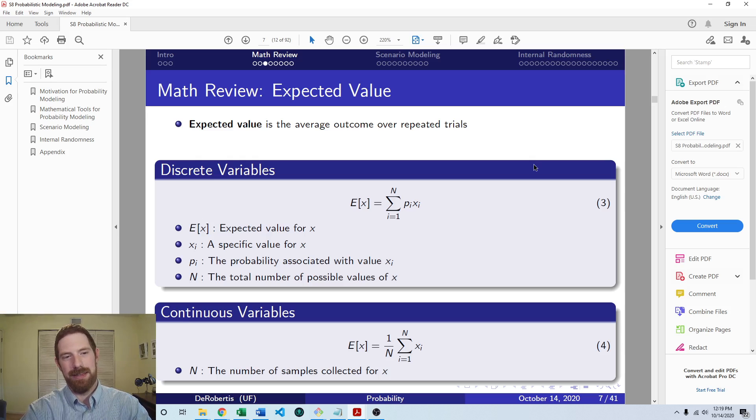So the calculation of it is a little bit different depending on whether the variable is discrete or continuous. So with a discrete variable, you take each possible outcome, and you multiply it by the probability of that outcome. And then you sum each of those terms up. Whereas with continuous, it's just an average across the outcomes which have occurred. So we'll look at applying both of these in our models throughout the course.